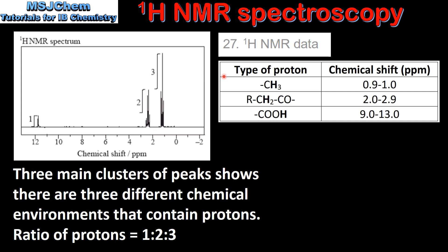Next we can identify the type of proton according to their chemical shift. The peak with a chemical shift of approximately 12 ppm corresponds to the proton in a carboxyl group. The peak with a chemical shift of approximately 2.5 ppm corresponds to the two protons in a CH2 group. Finally, the peak with a chemical shift of approximately 1.2 ppm corresponds to the three protons in a CH3 group.